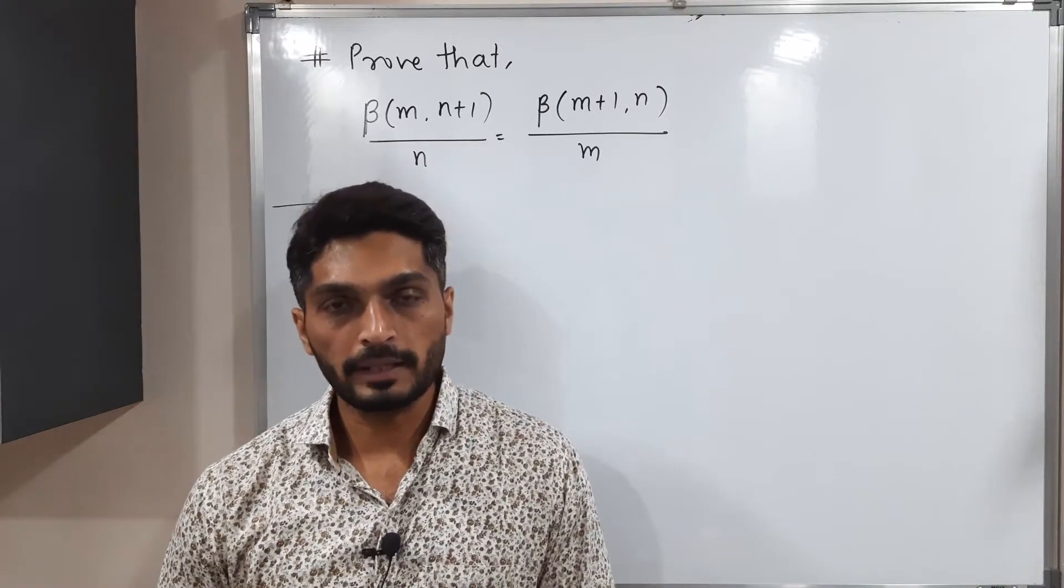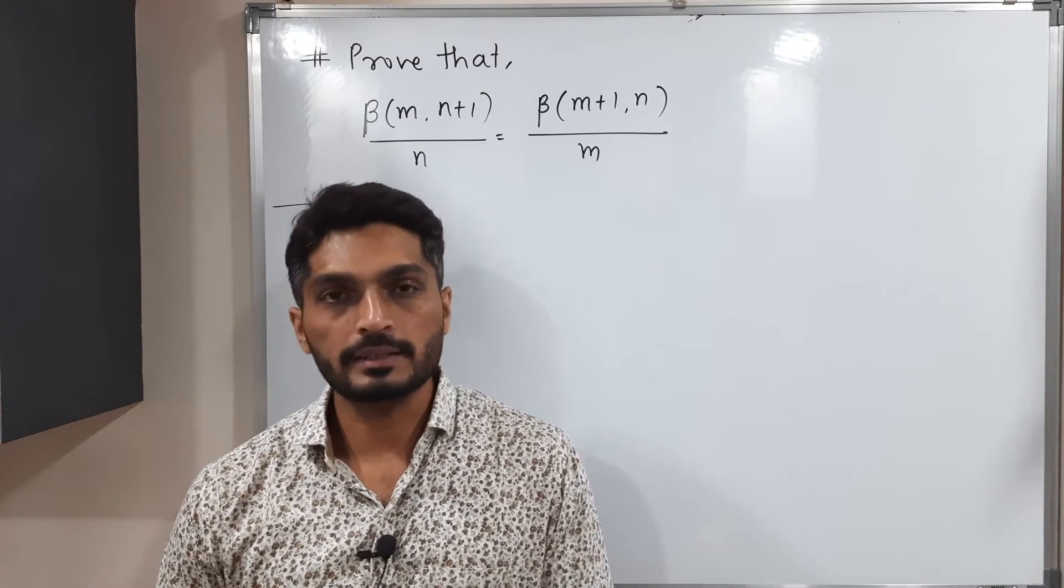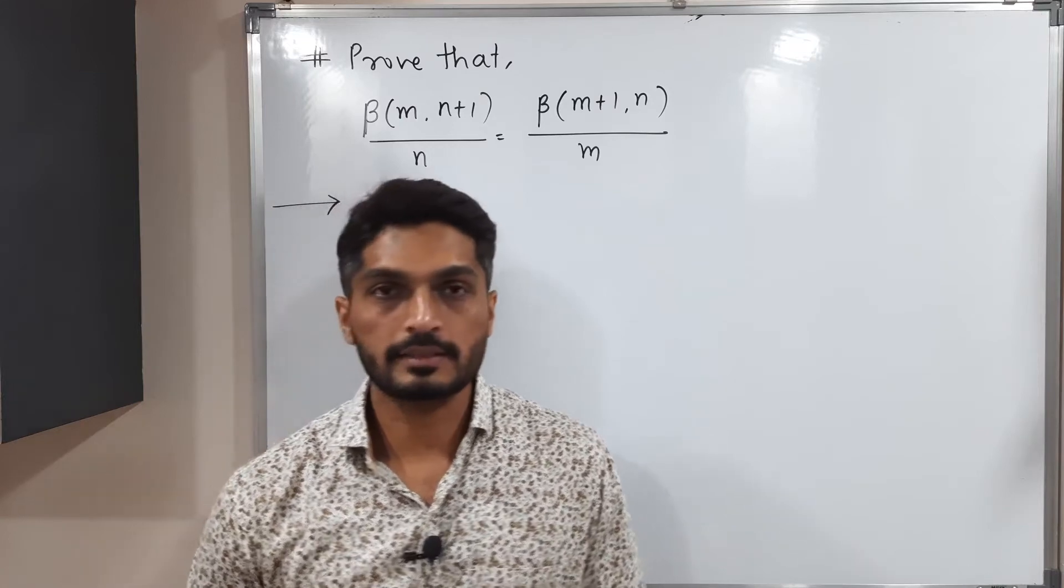Let us discuss this result of beta function. So we have to prove one equality here. It's quite easy. We'll start with the left hand side and we will try to bring the right hand side. Let us start.